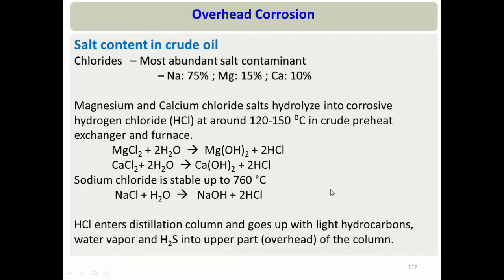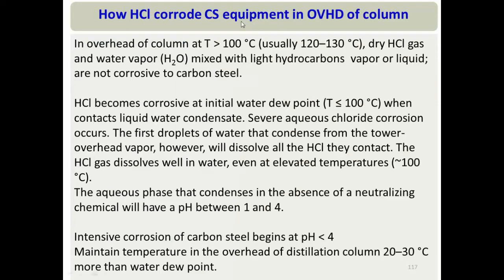Dry HCl gas along with water vapor and light hydrocarbons is not corrosive at all. However, when temperature drops below the dew point of water vapor, water condenses and dissolves all the HCl in contact with it. An aqueous phase forms that is highly acidic, with pH as low as 1 to 4. At such low pH, acidic corrosion — also called low-temperature corrosion — can occur.